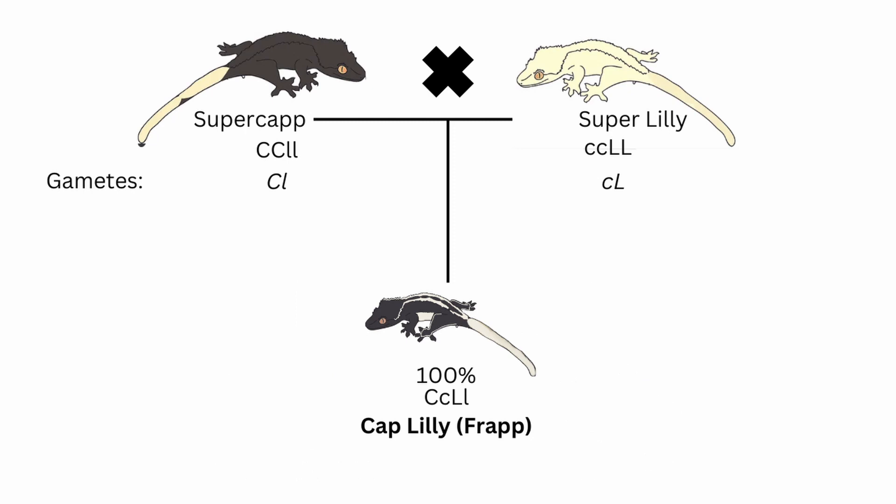If we could breed a super cap to a super lily-white, 100% of the kits — meaning all of them — would be frappuccino crested geckos. Since there are no super lily-whites because two copies of the lily-white gene kills the crested gecko, this pairing is impossible. But it would be the best way of making frappuccino crested geckos if that were your goal; however, since it is impossible, you're not going to be able to do so.